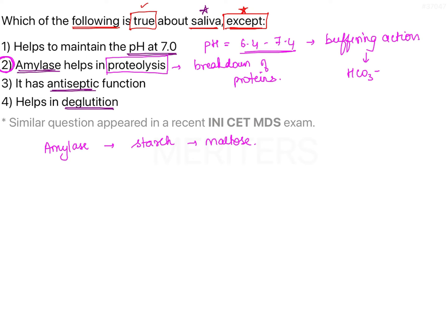The third option says saliva has antiseptic function. Antisepsis means free of or absence of pathogenic microbes, which is consistent with the antimicrobial actions of saliva — so this is true. The fourth option says it helps in deglutition — mucins in saliva aid in bolus formation and therefore in swallowing. Therefore, out of the four options, option two — amylase helps in proteolysis — is not true about saliva. Amylase is involved in carbohydrate digestion, not proteolysis. The correct answer is option two.